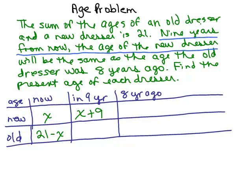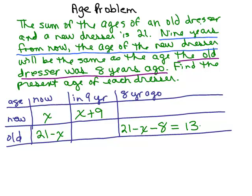The problem also discusses the old dresser's age eight years ago. If the old dresser right now is 21 minus X, how would you figure out how old it was eight years ago? You would subtract eight. So 21 minus X minus 8, simplifying gives us 13 minus X, or you could write that as negative X plus 13.